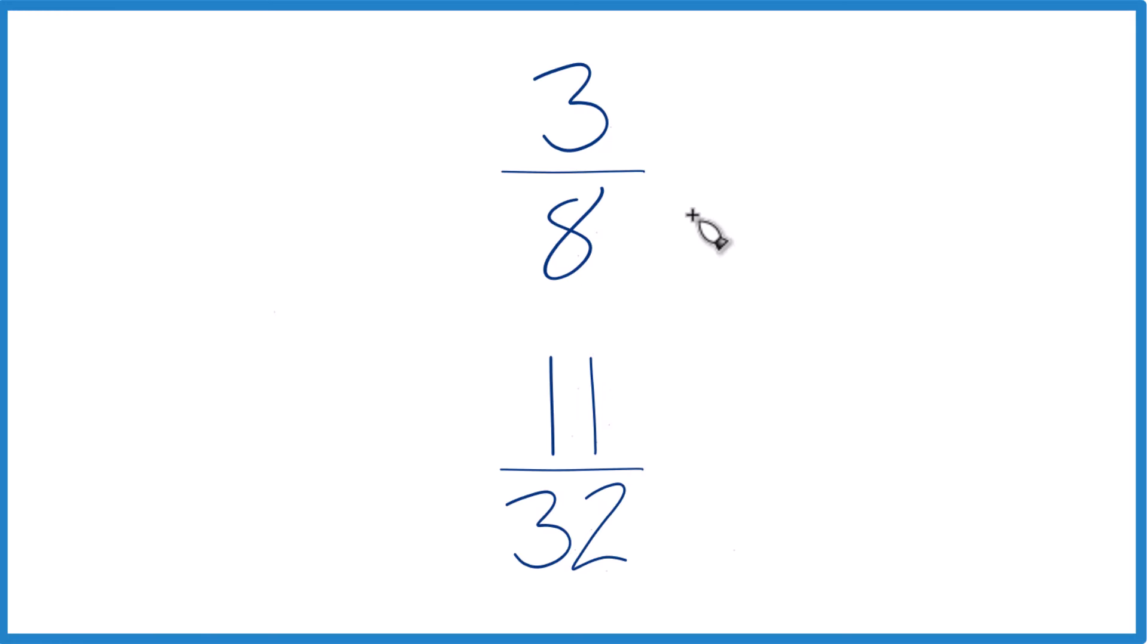You could, on a calculator, divide 3 by 8, get a decimal, divide 11 by 32, get a decimal, and then compare them, figure out whether 3 8ths is larger than 11 32nds.